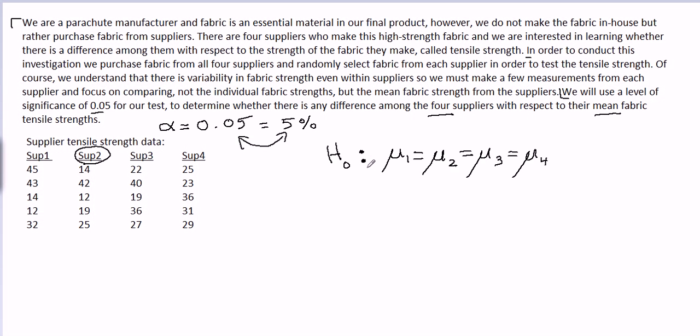The average tensile strength of all the fabric it made would be mu one. So we want to see if mu one equals mu two. Think about what mu two might mean—it's the population mean tensile strength of supplier two.